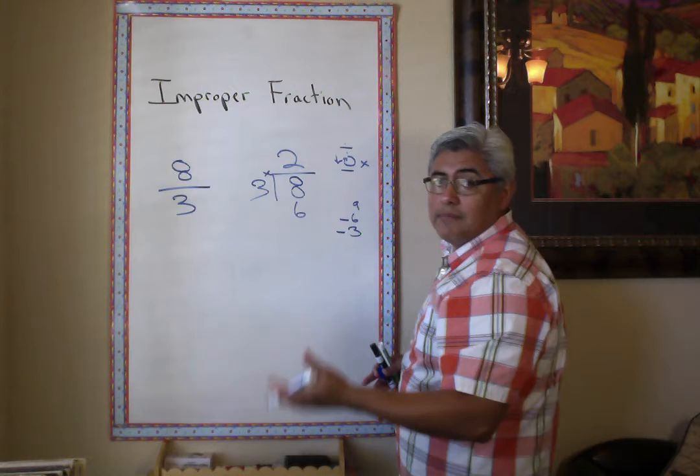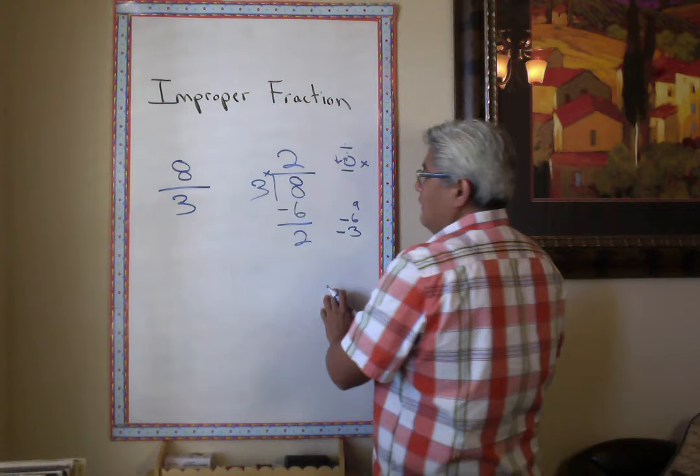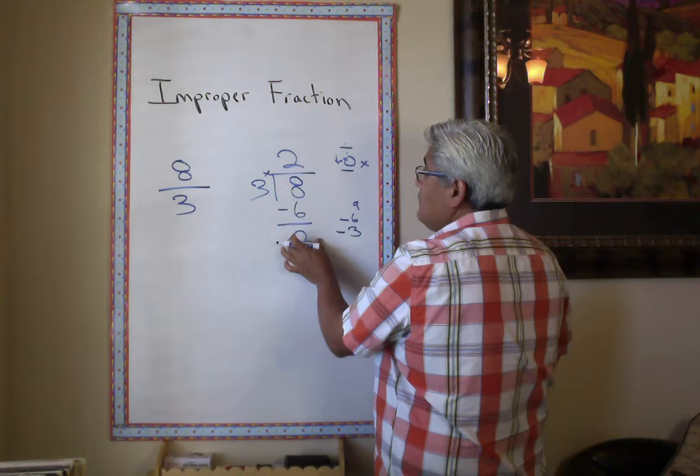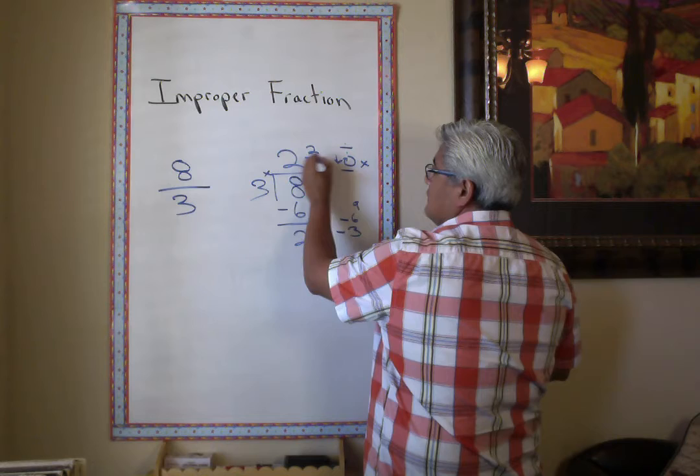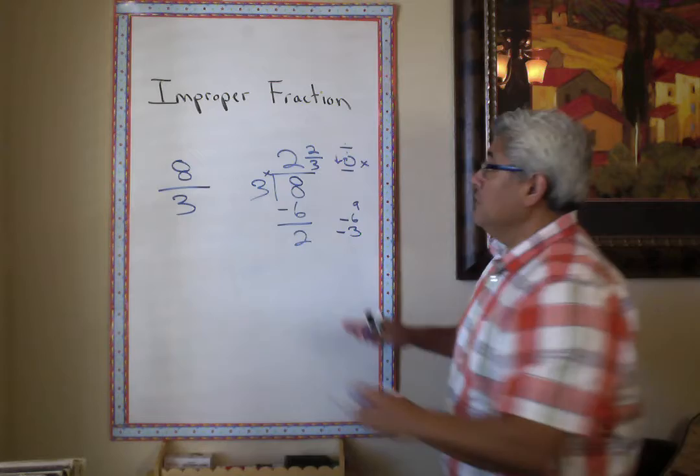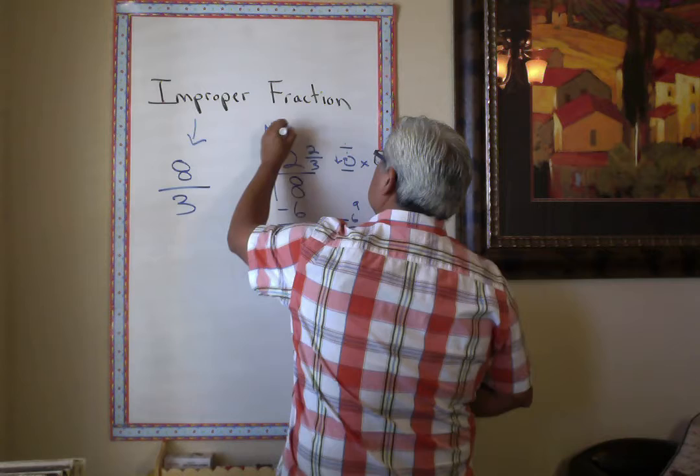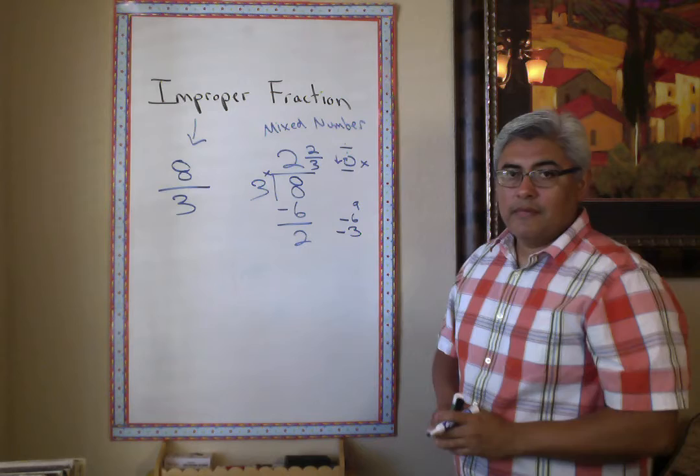What's three times two? Six. Now what's my next step? Subtract — eight minus six is two. That's your remainder that's left over. Put it on top and the divisor becomes the denominator. So my answer should be two wholes and two thirds. From an improper fraction, we turn it into a mixed number using division.